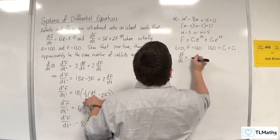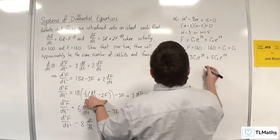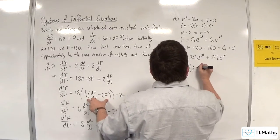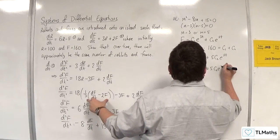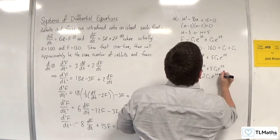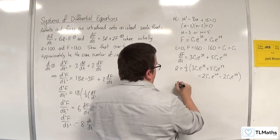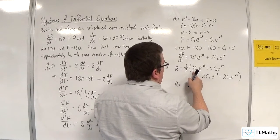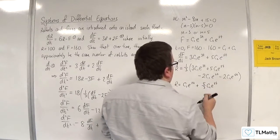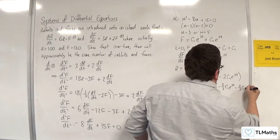Differentiating f gives df/dt = 3c₁e^(3t) + 5c₂e^(5t). Substituting into r = (1/3)(df/dt) - 2f: r = (1/3)[3c₁e^(3t) + 5c₂e^(5t)] - 2[c₁e^(3t) + c₂e^(5t)], which gives r = c₁e^(3t) + (5/3)c₂e^(5t) - (2/3)c₁e^(3t) - (2/3)c₂e^(5t).